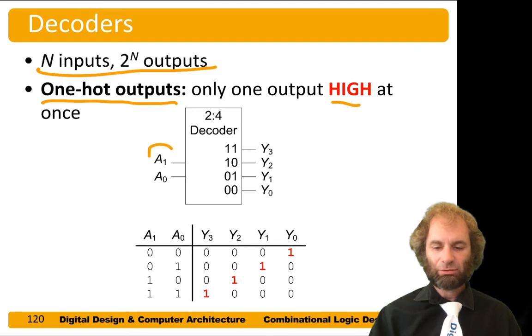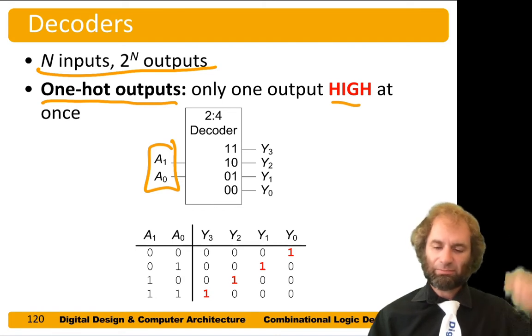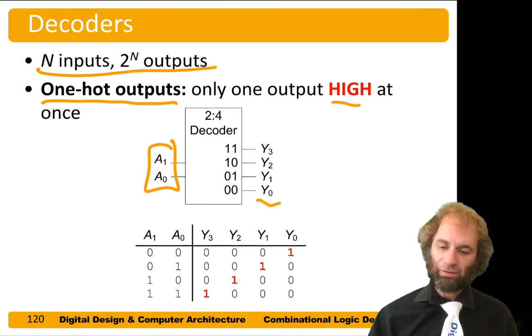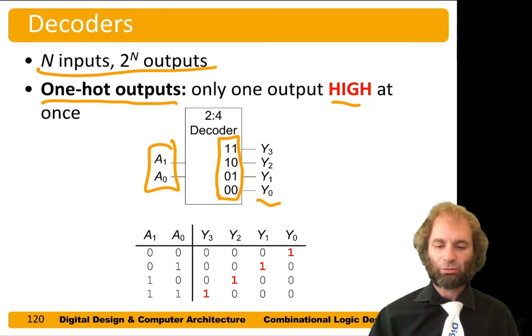For example, a 2 to 4 decoder has two inputs. Let's call them a0 and a1. These are often called addresses because we use this with a memory. And we have four outputs. We'll call them y0 through y3 and we can write the 0 through 3 in binary.